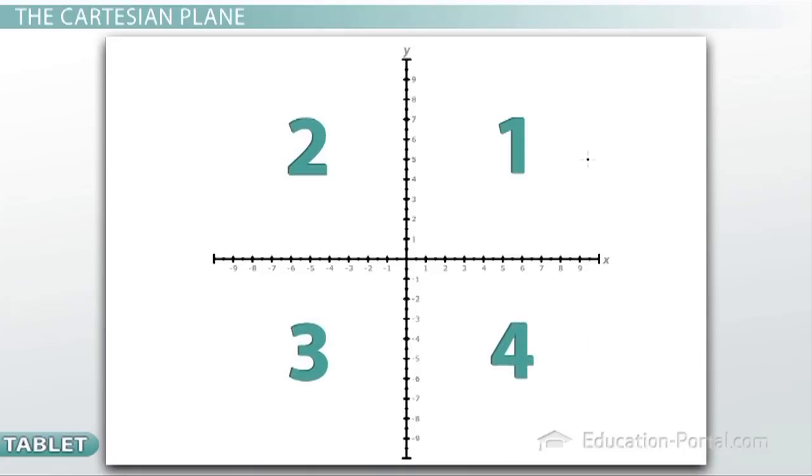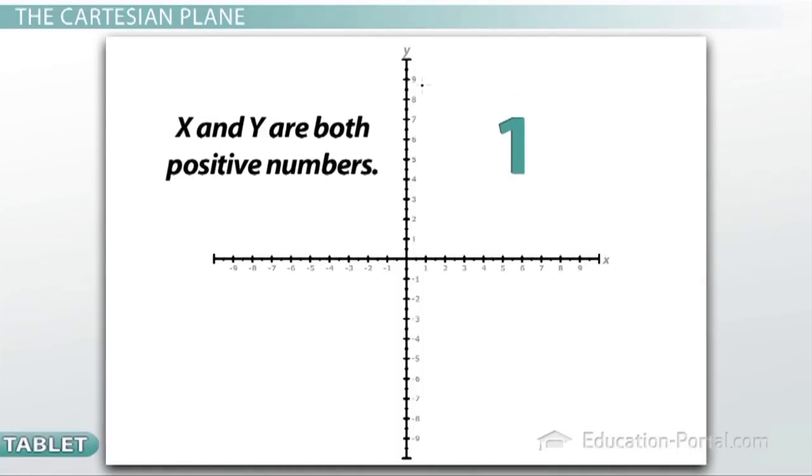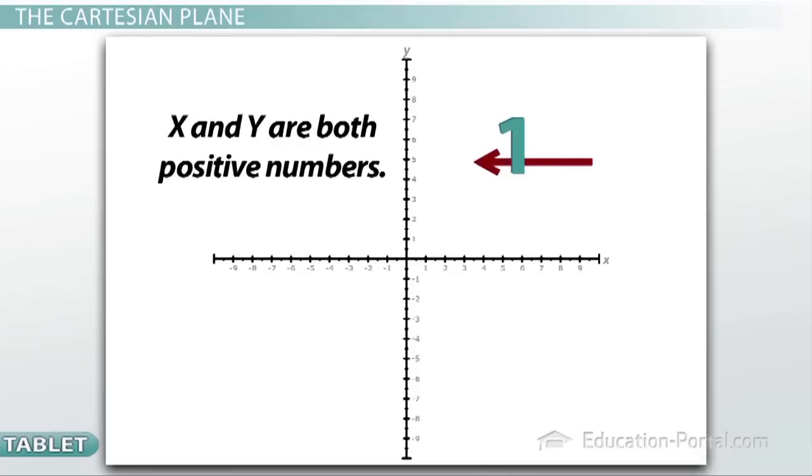Quadrant 1 is called quadrant 1 because it's the place where both the x and the y are positive numbers, which means that as we go left on the x-axis we get the negatives, and as we go down on the y-axis we get the negatives.